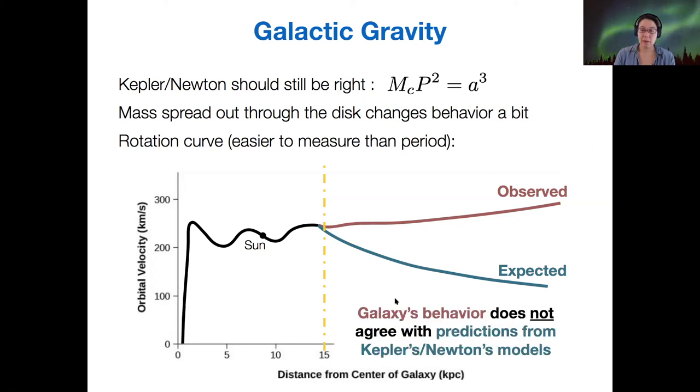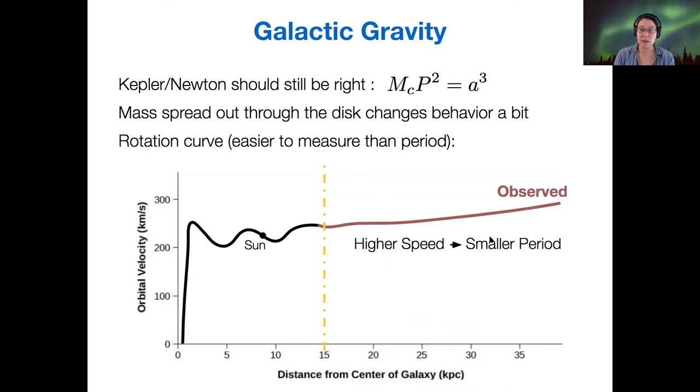If the galaxy's behavior doesn't agree with the predictions from Kepler's or Newton's models, maybe Newton's universal law of gravity isn't so universal. Maybe Kepler's laws no longer hold. We have really no reason to believe that either of those things are true. So instead, the only possibility is that there must be some extra mass in the system to cause this higher speed.